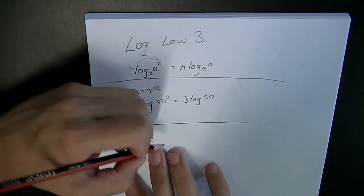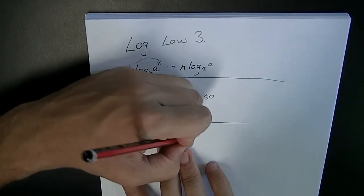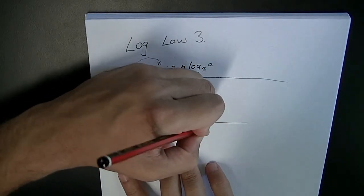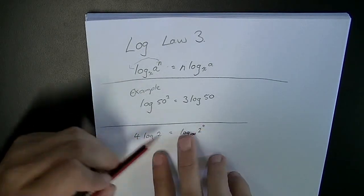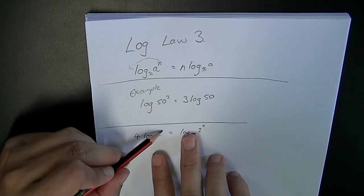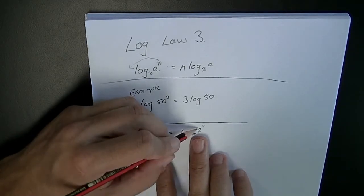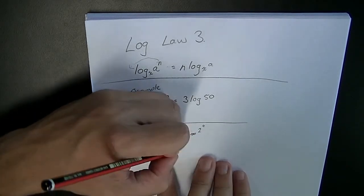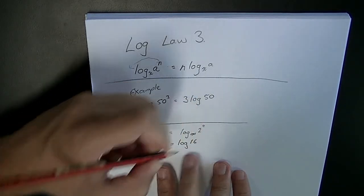4 log base 10, 2 is equal to log base 10, 2 to the 4. Don't need that base in there. Log 2 to the 4. See that 4's come out here and become an index for the 2. And, of course, you can rewrite that. 2 to the 4 is 2, 4, 8, 16. You can rewrite that as log 16, log base 10, 16.